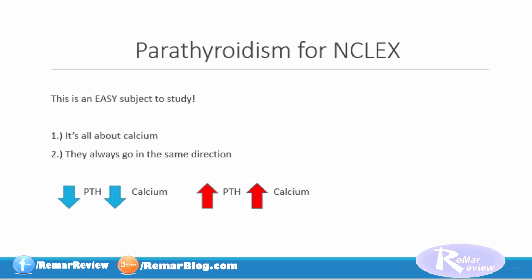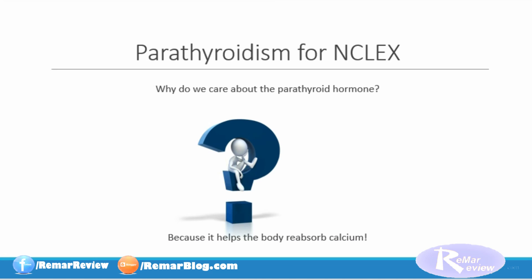These are your notes for parathyroidism for NCLEX. This is such an easy subject to study. Because when it comes to the parathyroid hormone, point number one is that it's all about calcium. And point number two is the parathyroid hormone and calcium always go in the same direction. So if the parathyroid hormone is down, the patient's calcium levels will also be down. And if the parathyroid hormone is up, you can bet that the serum calcium level will be up as well. But why do we care about the parathyroid hormone?